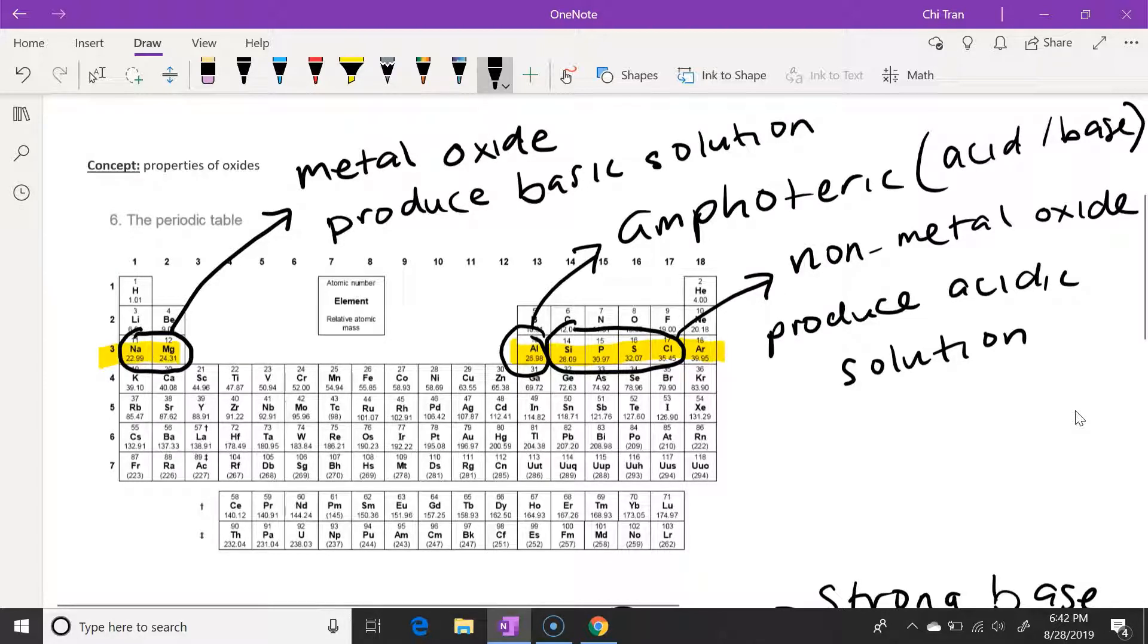And another general trend that we need to know is that the further left the element is, the stronger the basic solution will be. And the further right the element is placed, the stronger the acidic solution. So we can see a general trend of pH increases as we go towards the left of the periodic table.